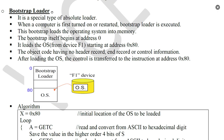Next is the bootstrap loader. The bootstrap loader is used by the OS to load the loader itself. Memory starts at location 0, with continuous locations for the bootstrap loader. Device F1 is used, and the OS is originally placed there. The OS reads memory one by one at continuous locations. That is the bootstrap loader's duty.